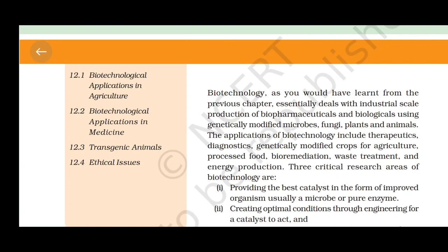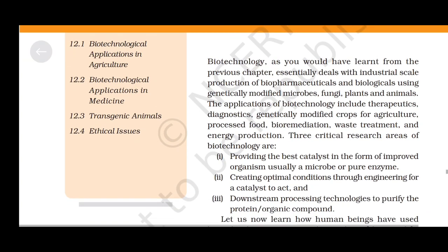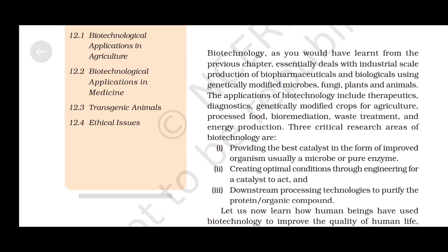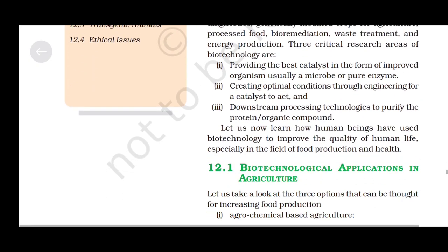Three critical research areas of biotechnology are: first, providing the best catalyst in the form of an improved organism, usually a microbe or pure enzyme; second, creating optimal conditions through engineering for a catalyst to act; and third, downstream processing technologies to purify the protein or organic compound. We will now learn how biotechnology has been used to improve the quality of human life, especially in the fields of food production and health.